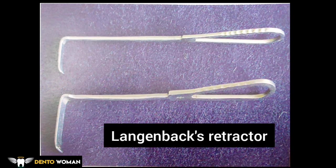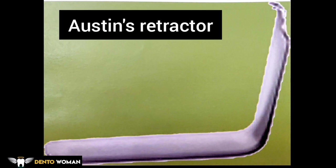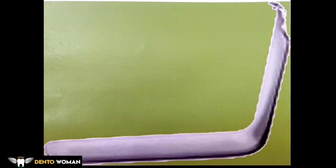Langenbeck's retractor — an L-shaped retractor with a long handle, used for retraction of the edges of a flap for improved visualization. Tongue depressor — also an L-shaped retractor but with no handle; it has a broad, flat, rounded blade used for retraction or depression of the tongue to improve visibility of the posterior pharyngeal wall and tonsillar region, and can also retract cheeks. Austin's retractor — also an L-shaped retractor with no handle, used for retraction of small intraoral flaps, as in removal of an impacted tooth.